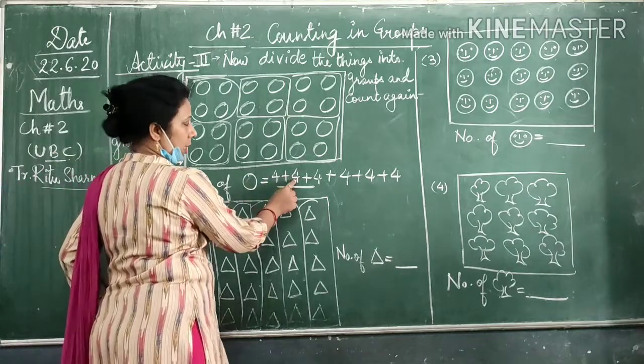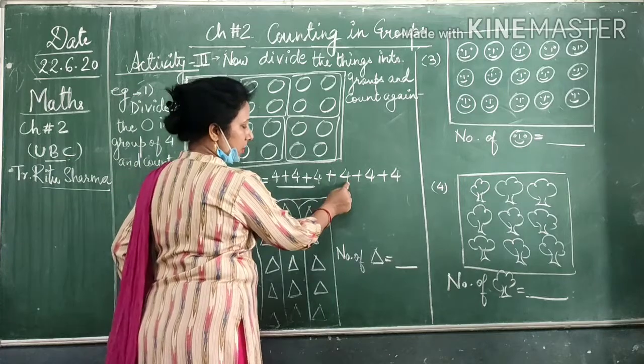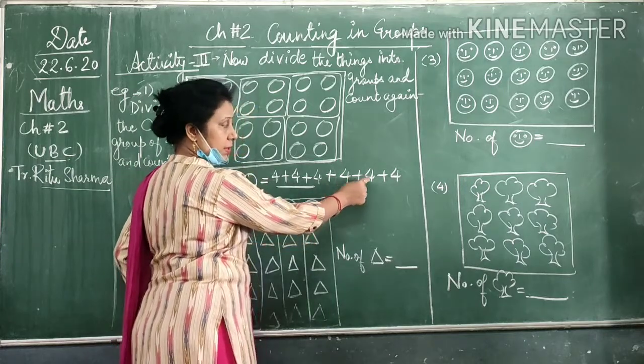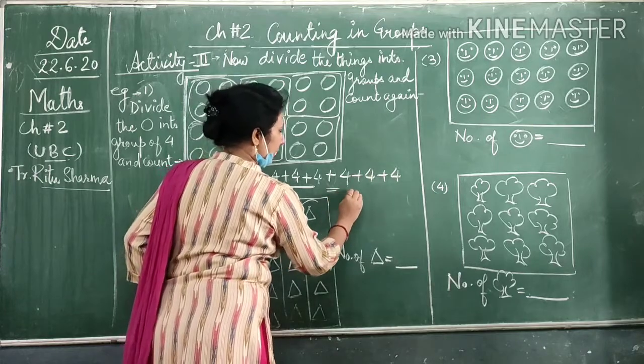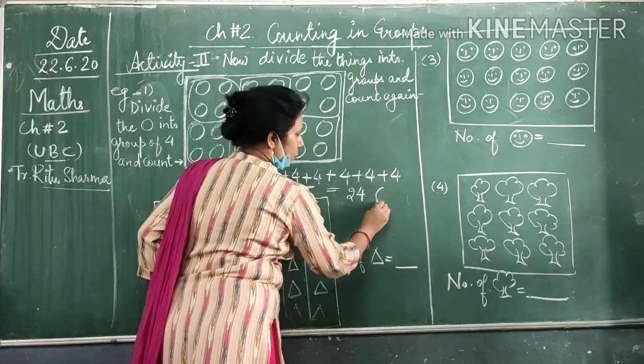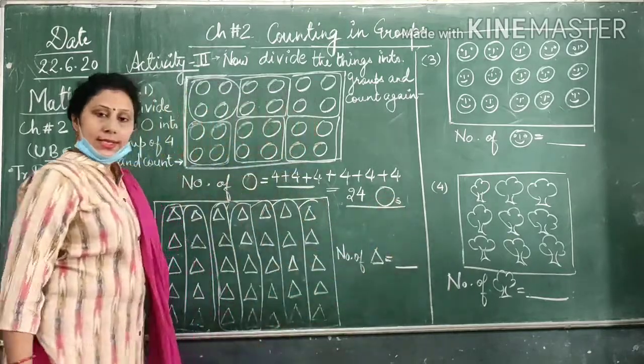Now you can easily count it. 4 plus 4 is 8, 8 plus 4 is 12, 12 plus 4 is 16, 16 plus 4 is 20, 20 plus 4 is 24. So you will get the answer as 24 circles.